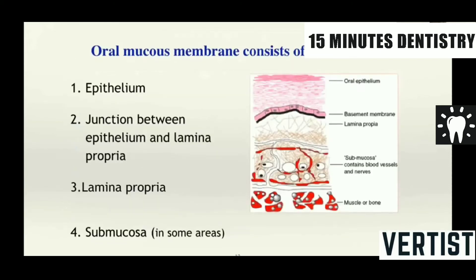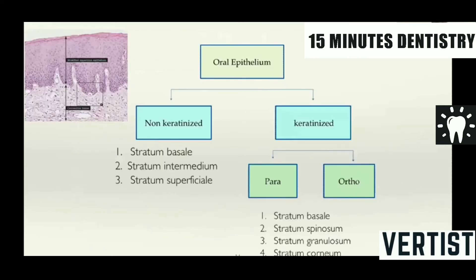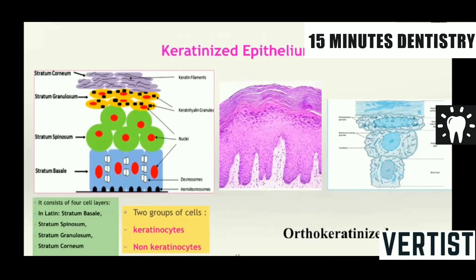When you talk about the histological structure of the oral mucous membrane, it consists of epithelium. There is a junction between the epithelium and the lamina propria which is called as the basement membrane. In oral mucous membrane, the connective tissue is named as lamina propria and then you have the submucosa. The oral epithelium can be non-keratinized and keratinized. The keratinized can be parakeratinized or orthokeratinized. The keratinized epithelium basically consists of four layers: stratum basalis, stratum spinosum, stratum granulosum and stratum corneum.